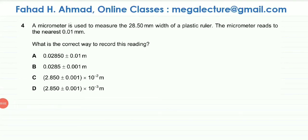The following question reads that a micrometer is used to measure the 28.50 millimeters width of a plastic ruler. So the value is given of the plastic ruler's width. The micrometer reads to the nearest 0.01 millimeters. What is the correct way to record this reading?